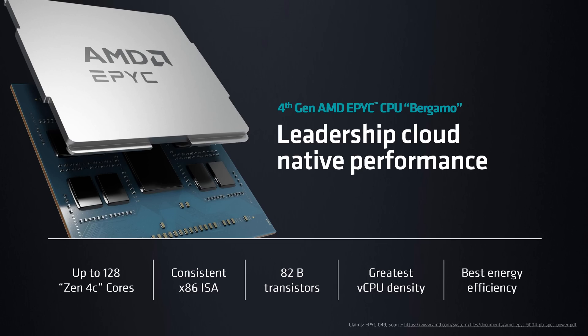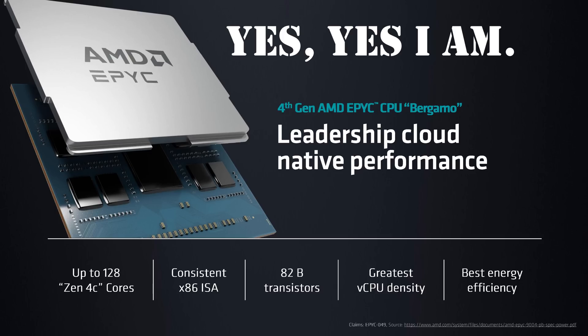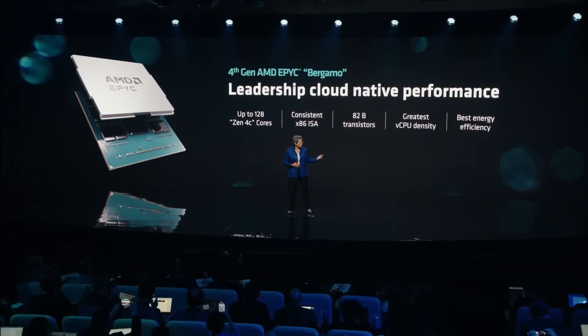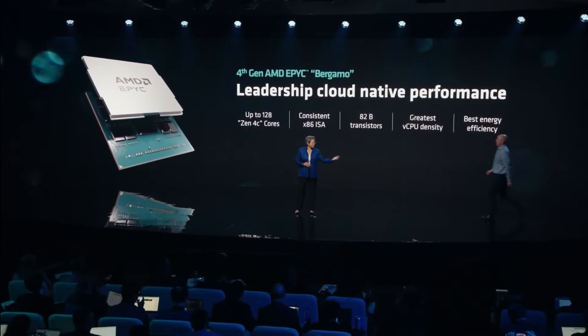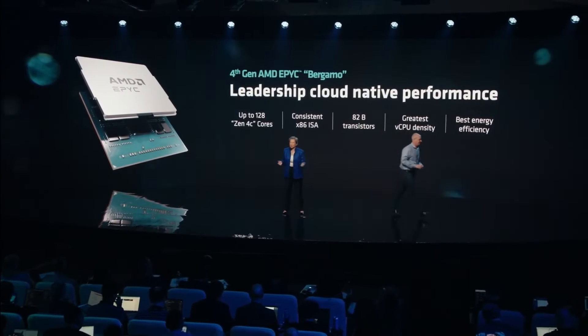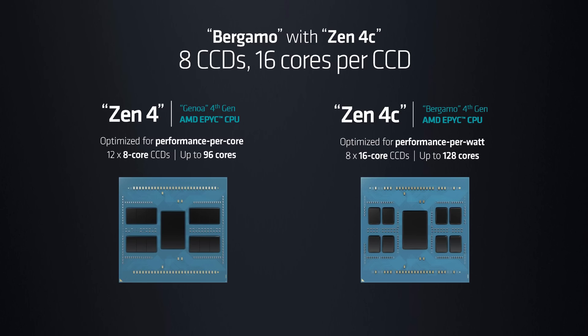These cores' first product is called Bergamo. This is the cloud version of EPYC Genoa, but instead of Zen 4 we've got Zen 4C cores. Instead of 96 cores, we've got 128 cores that support multi-threading, so 256 threads. And instead of having 12 chiplets, we have eight chiplets. Instead of the chiplets each having eight cores, we have chiplets with 16 cores.